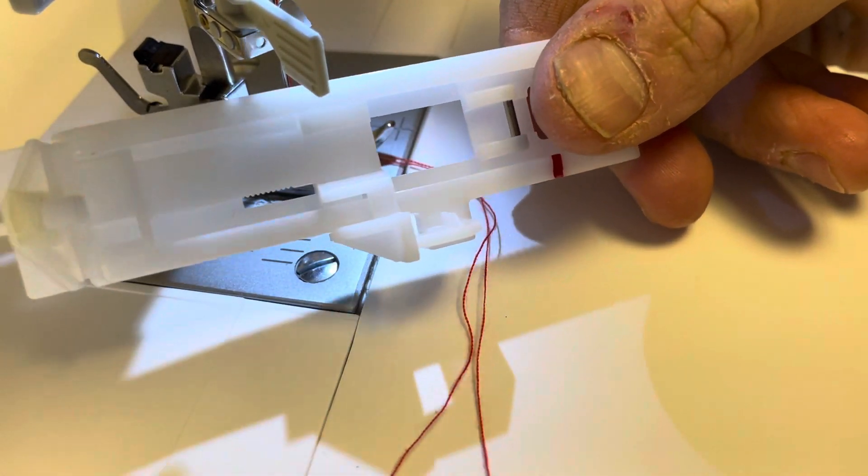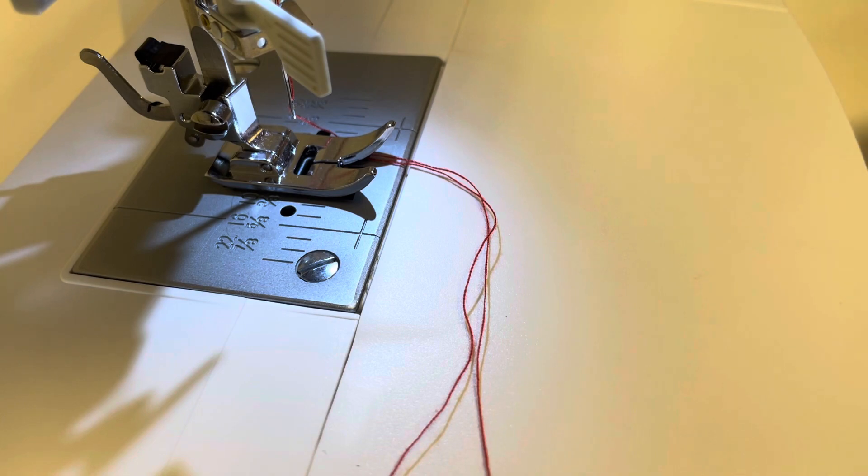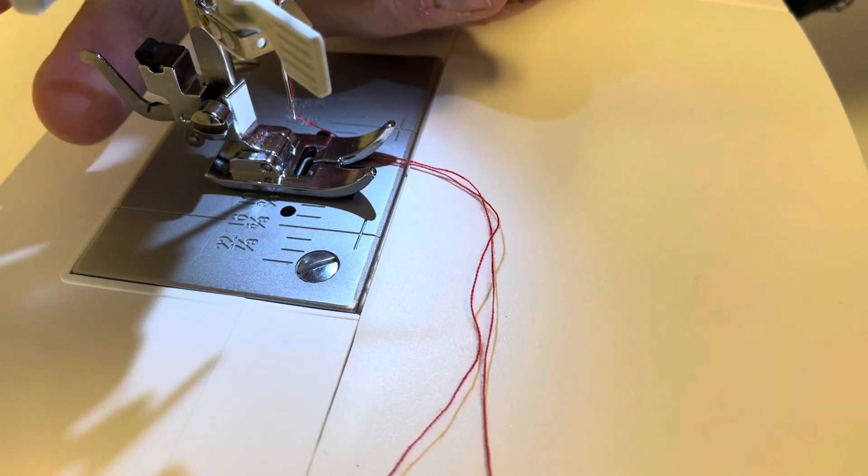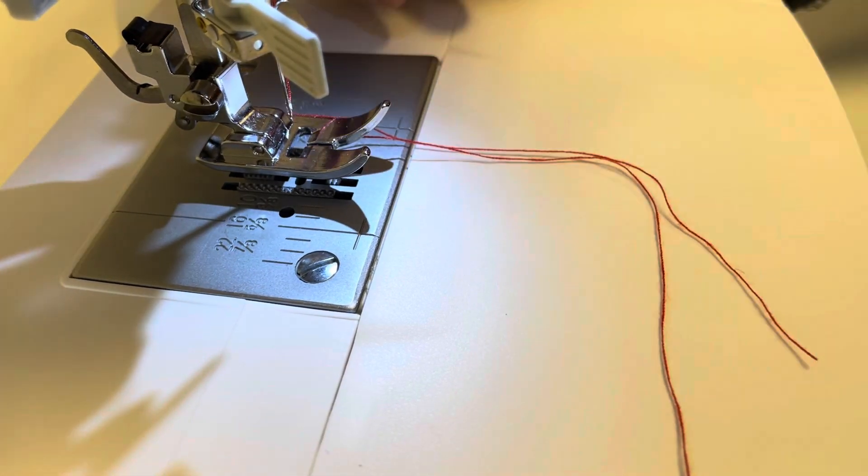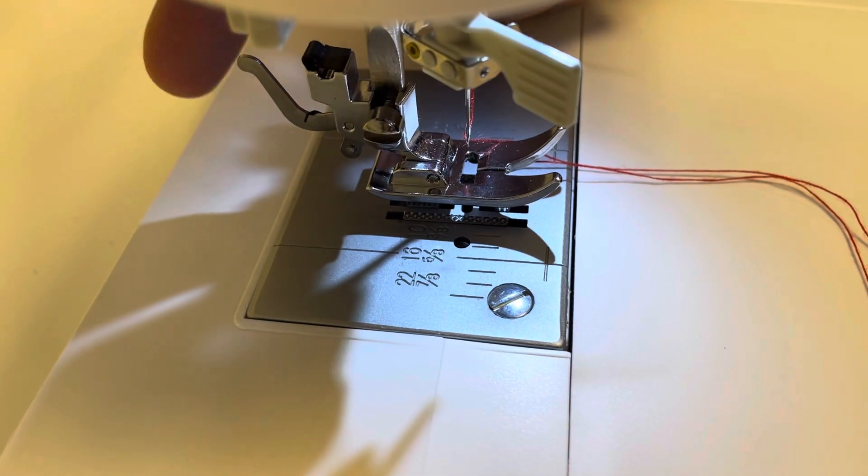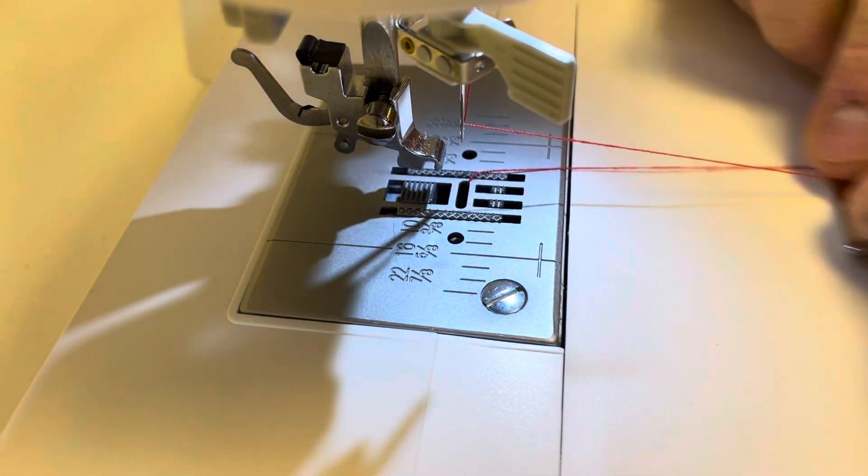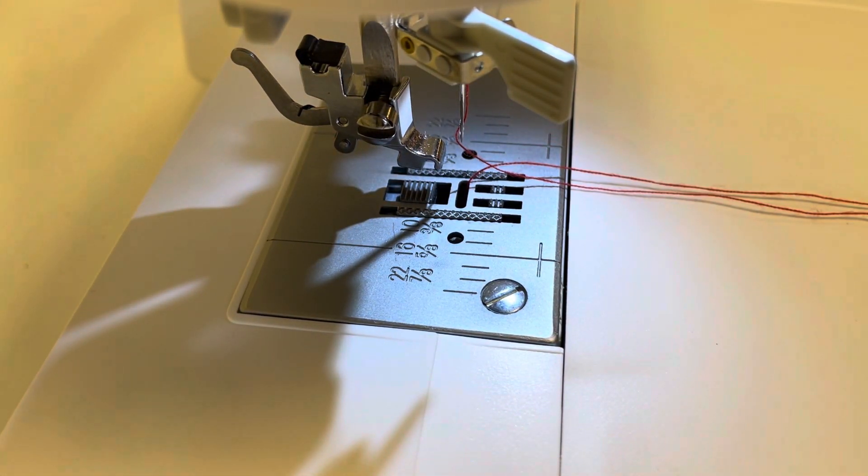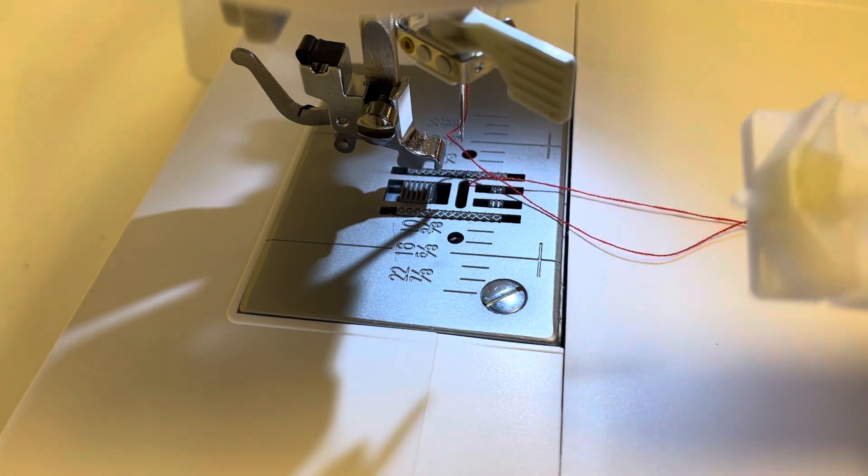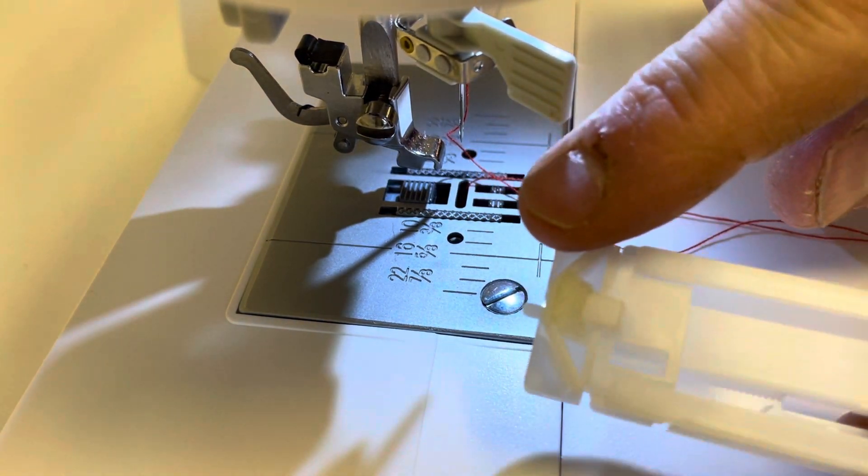So in this video we're going to go through the automatic buttonhole. First of all we'll put the automatic buttonhole foot on and on the back here you'll see a little lever so we'll press that and then we've got a bar. Now the back of it is the back of the foot.